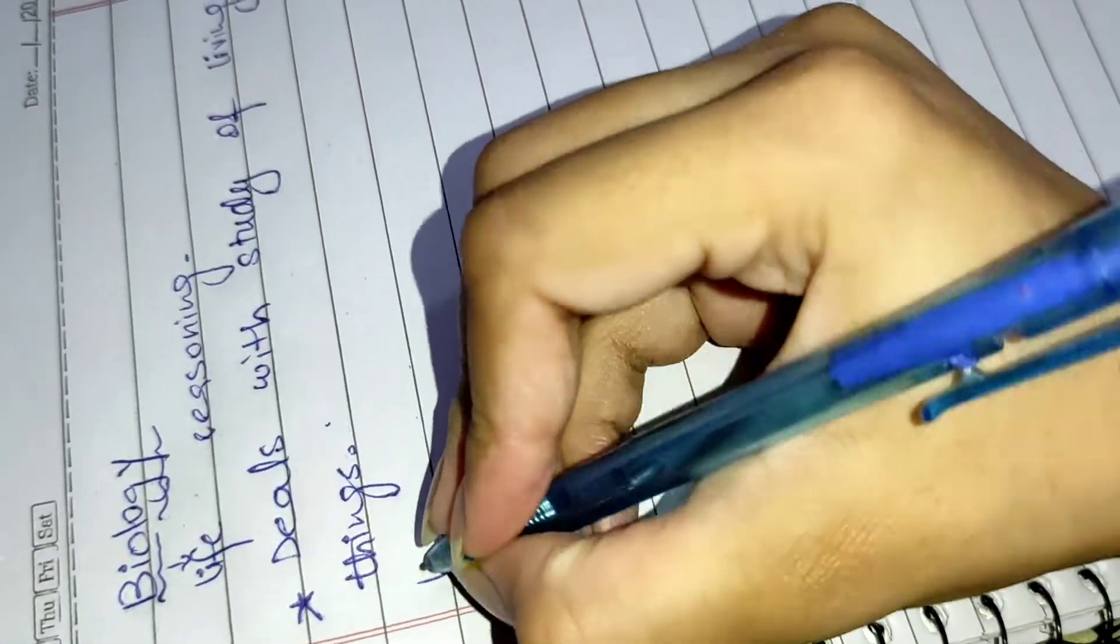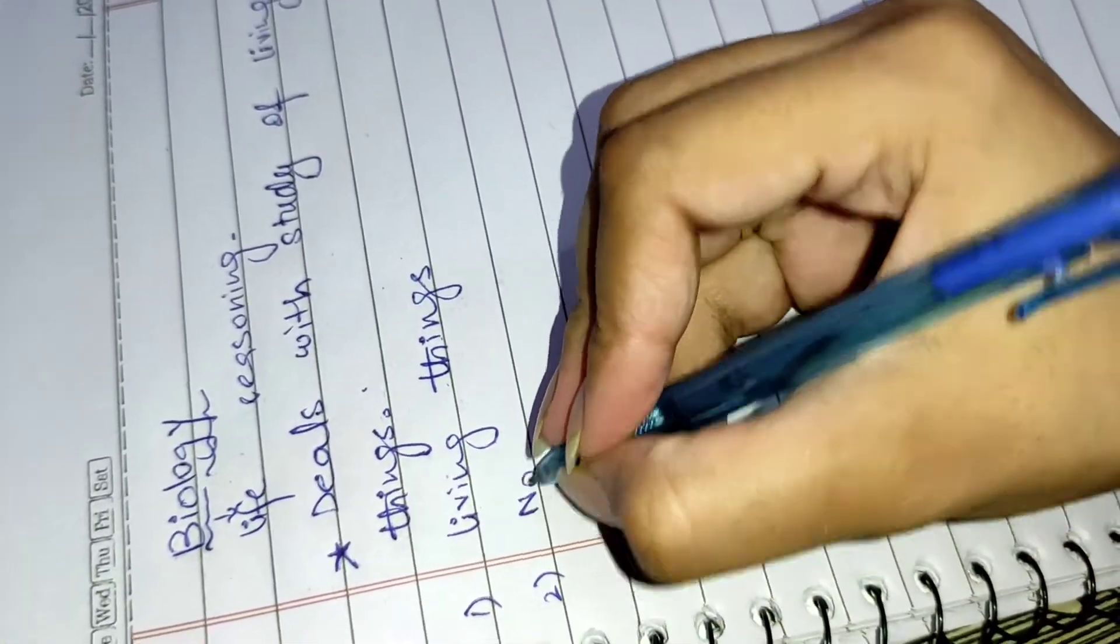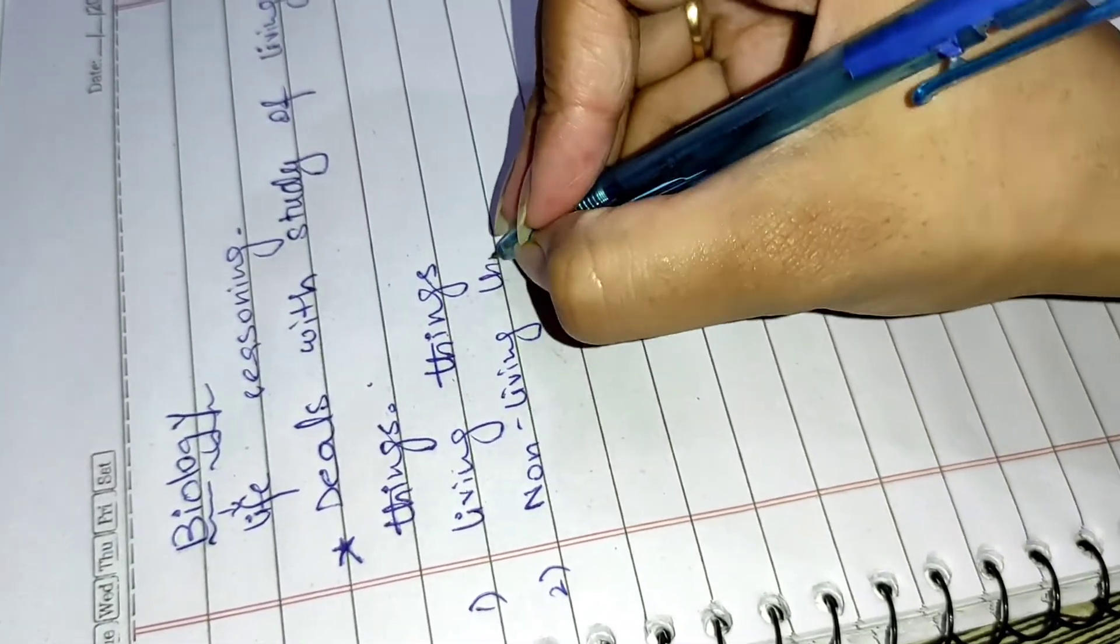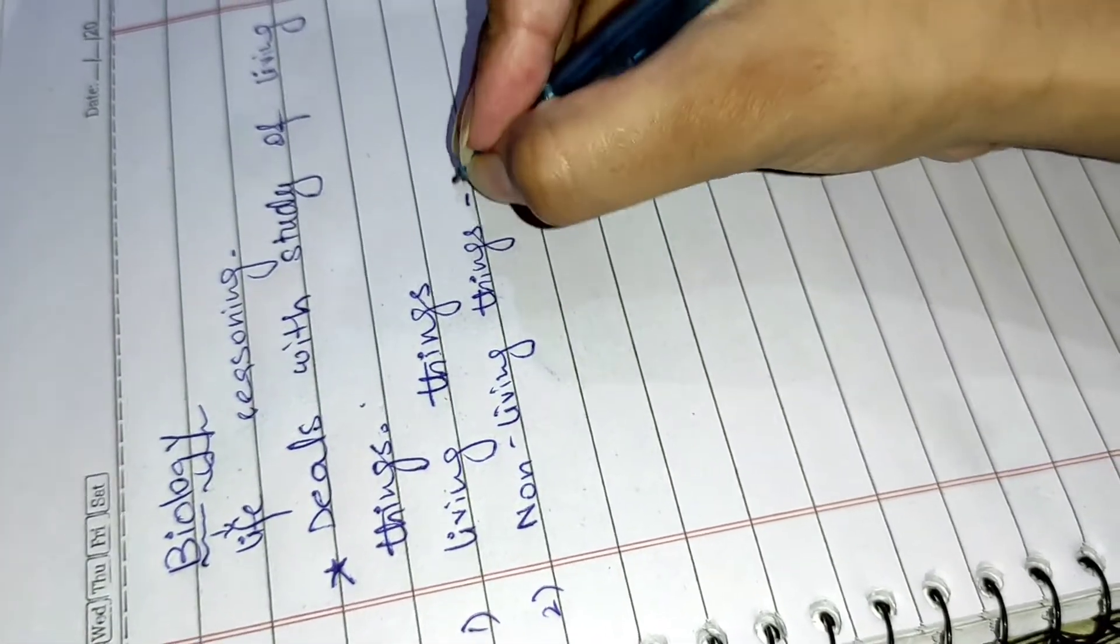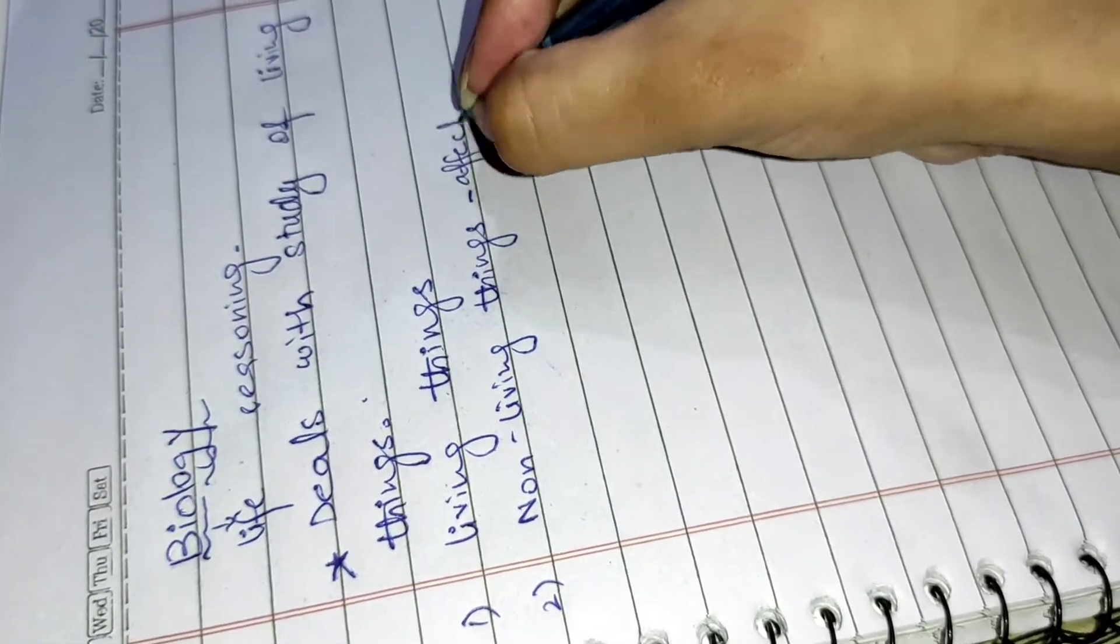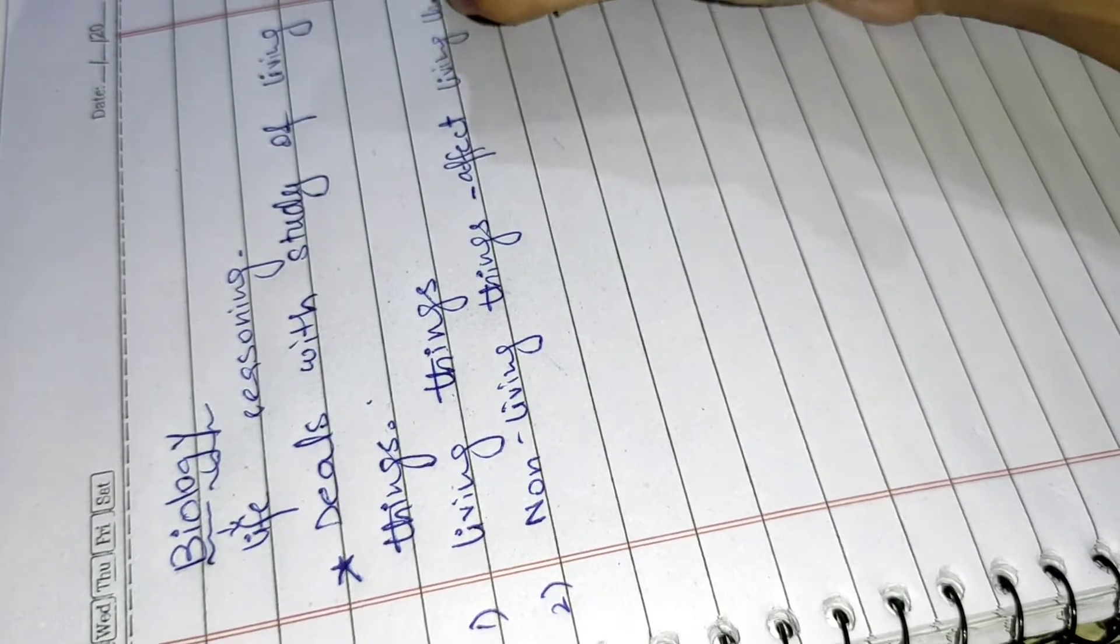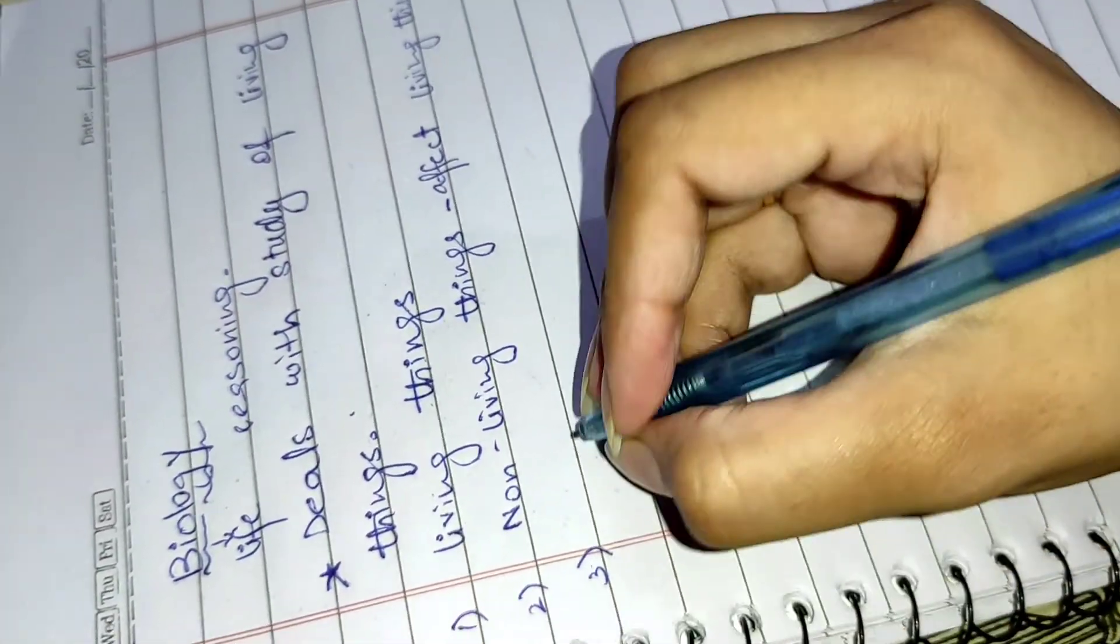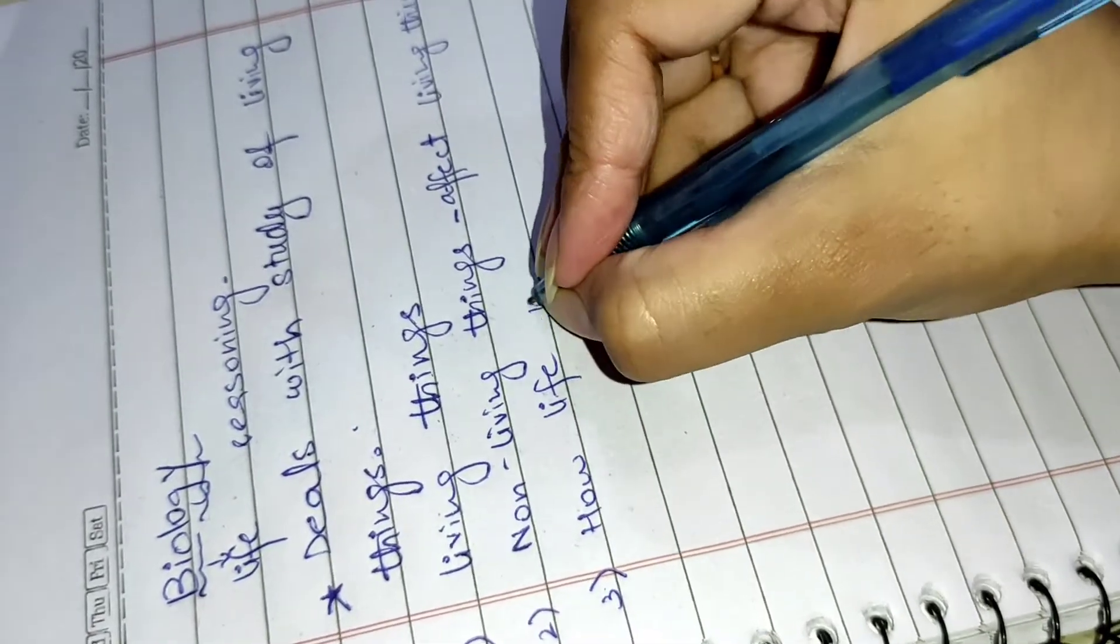First one is living things. Second one is non-living things which affect living things. Now the last thing is how life works.